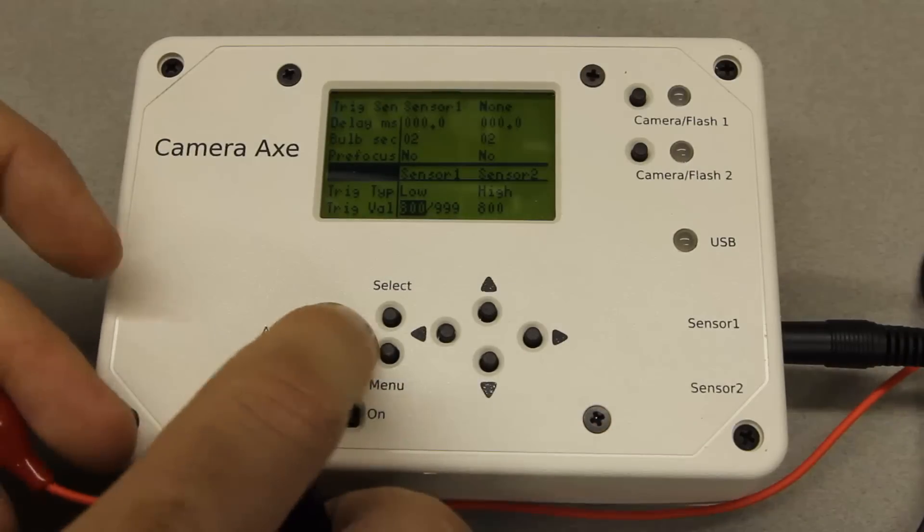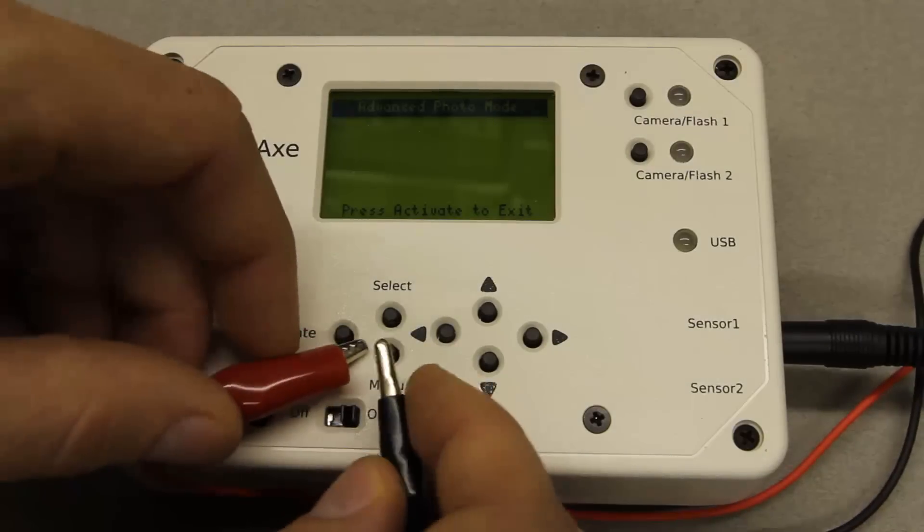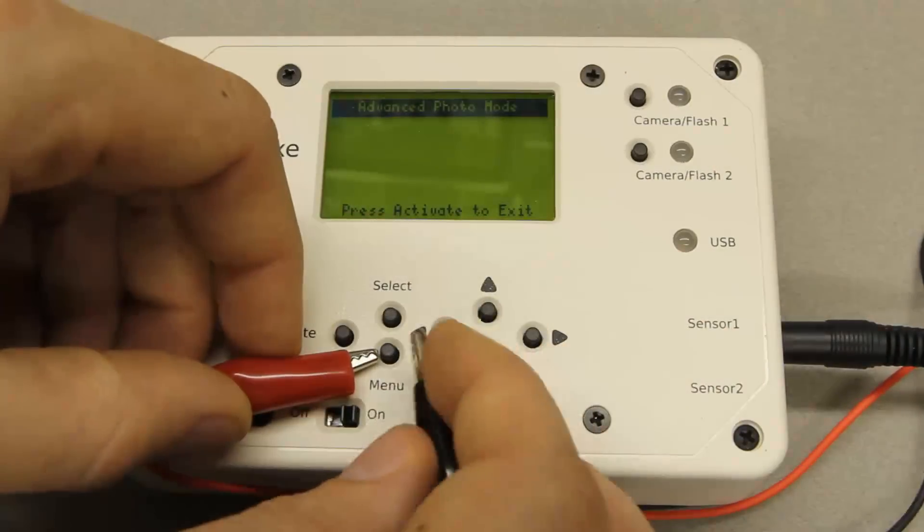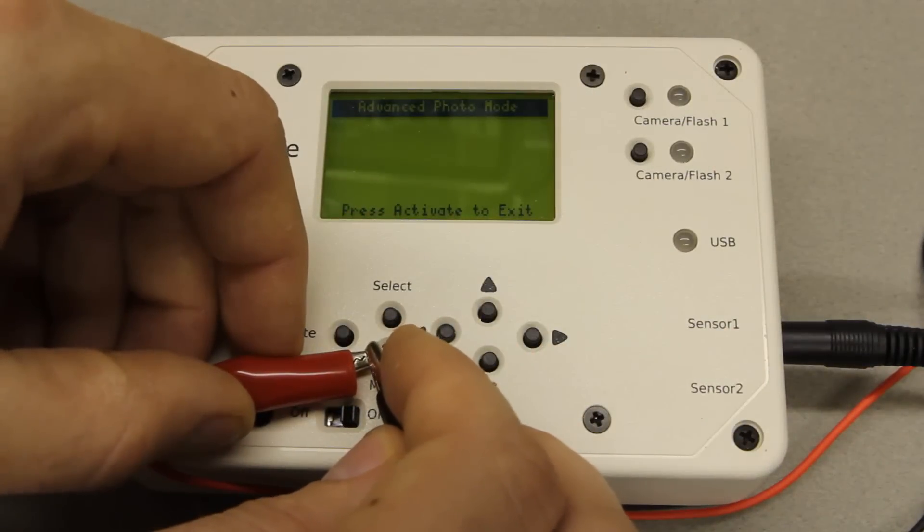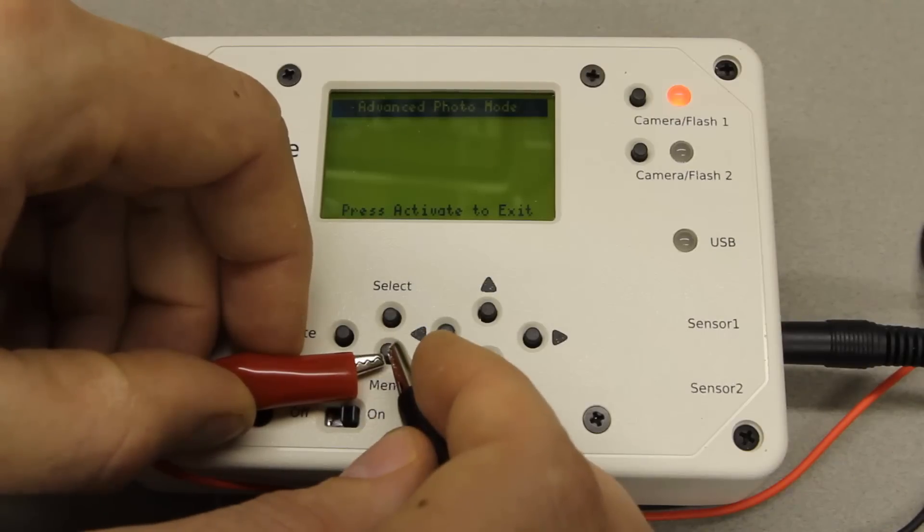Now I'll hit activate. When these two things short together, the camera flash LED will go on, which indicates that the camera flash would be triggered. There you go.